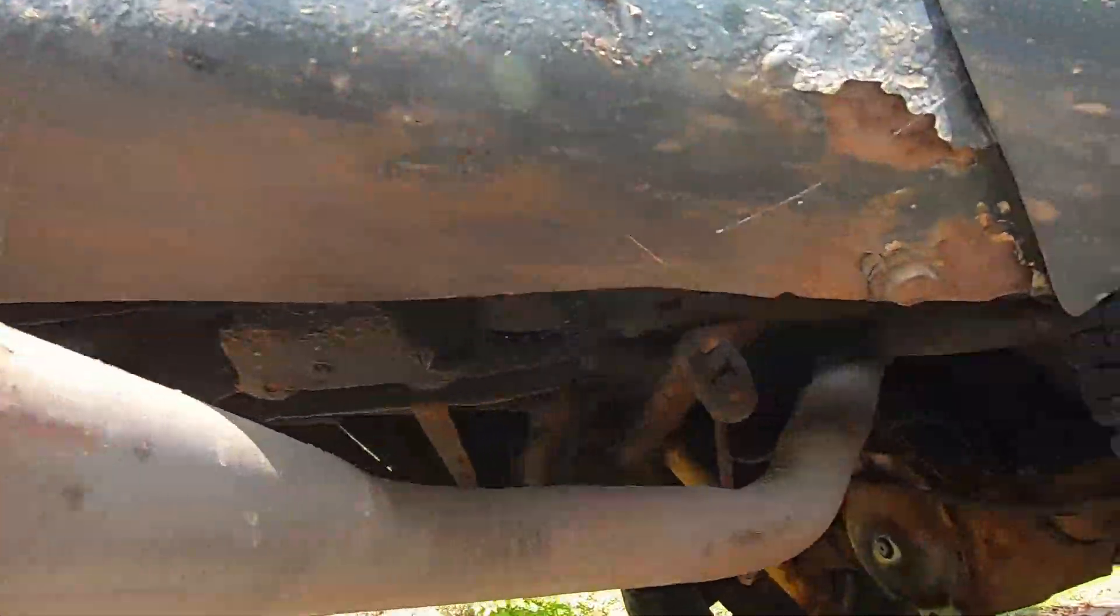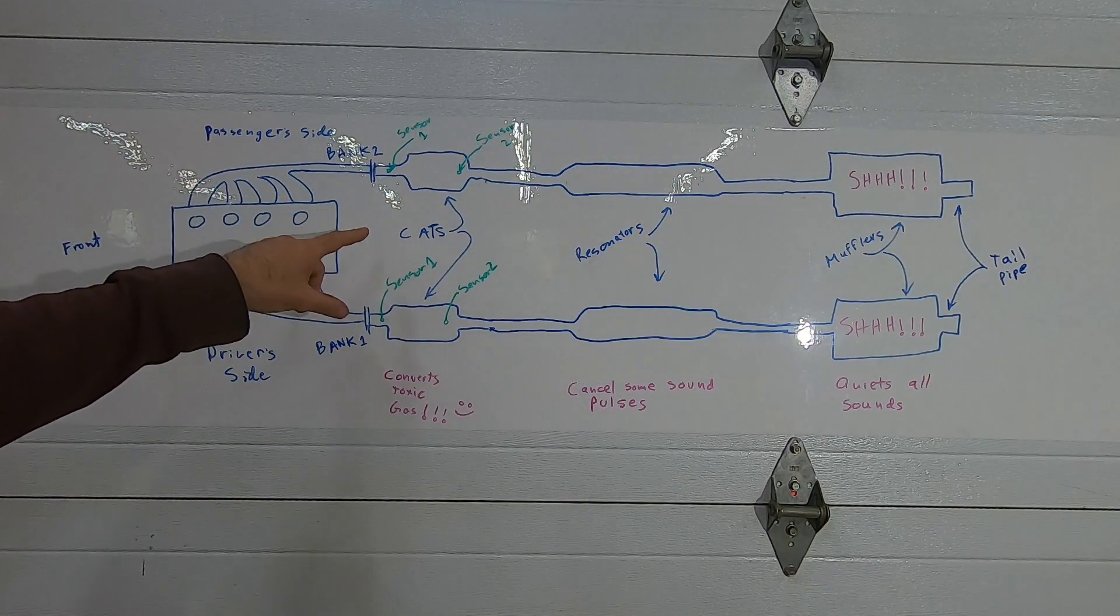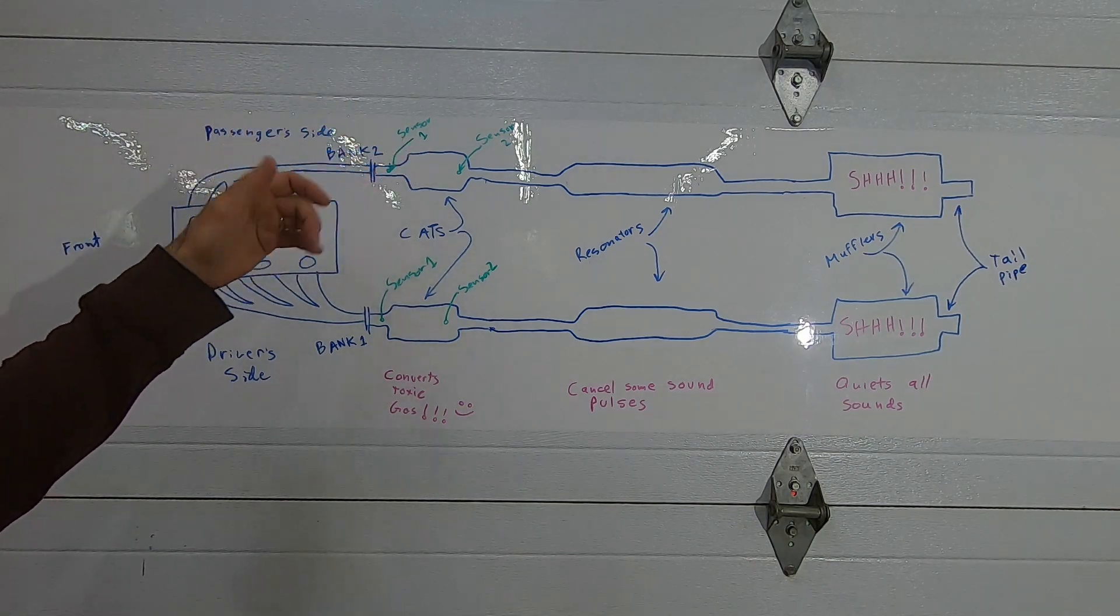Finally the exhaust goes out the tailpipe. Here's a fairly short tailpipe coming out of a 2012 Mustang GT and here's a longer tailpipe that comes out the back of a Mazda or a pickup truck.